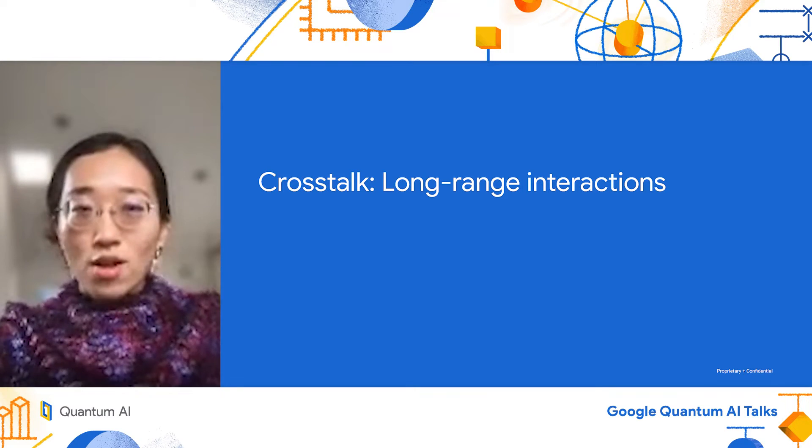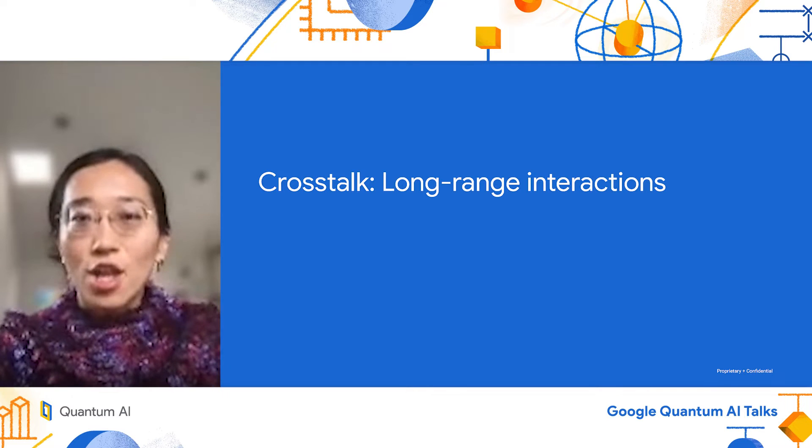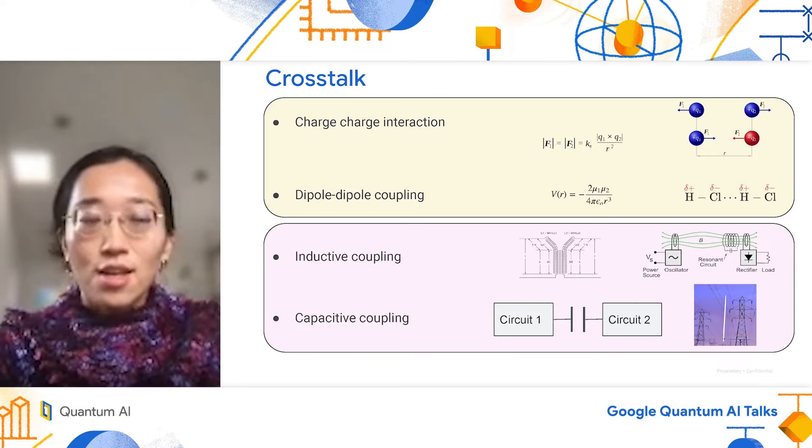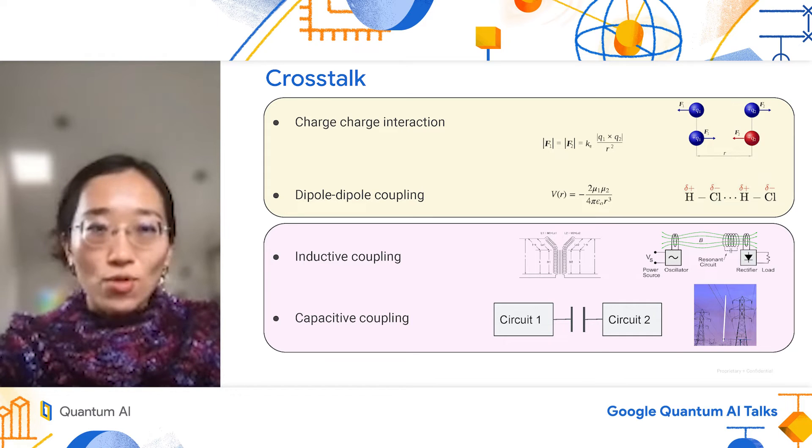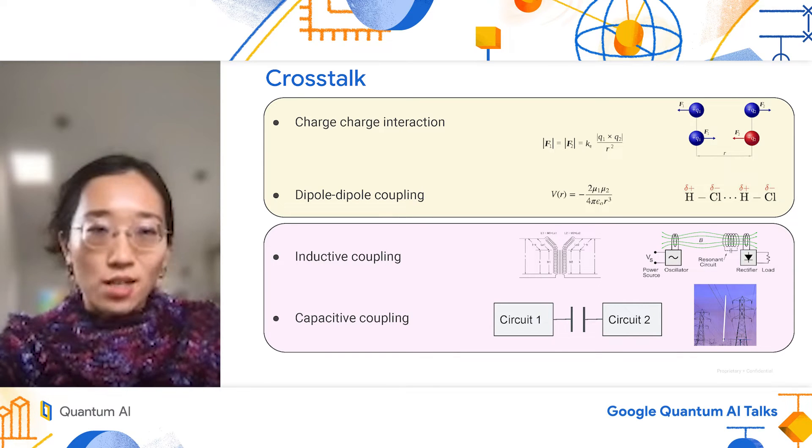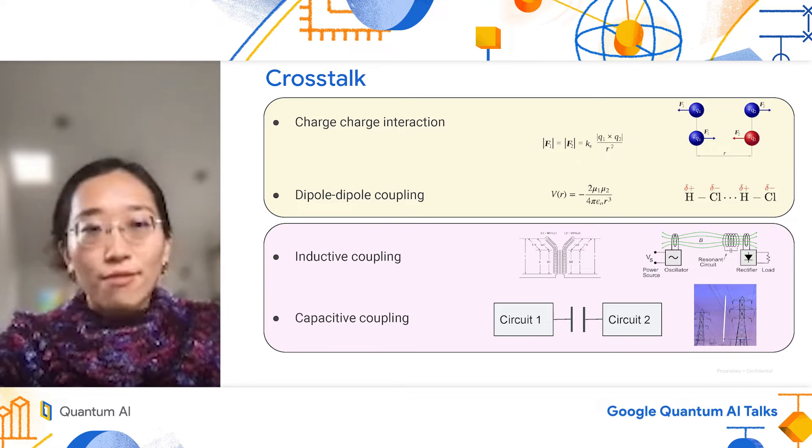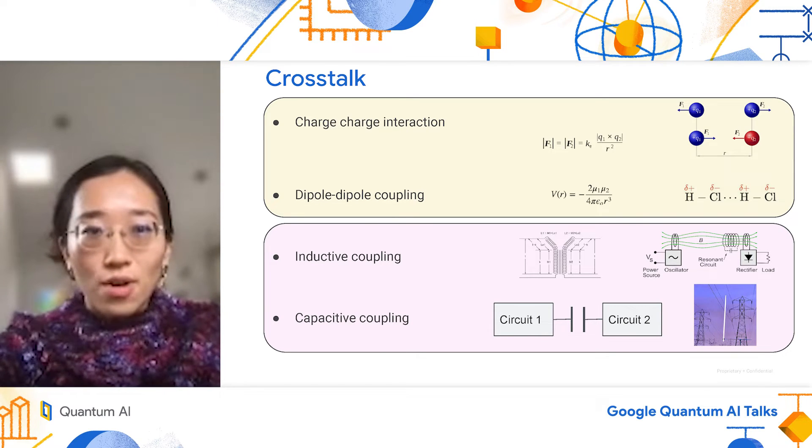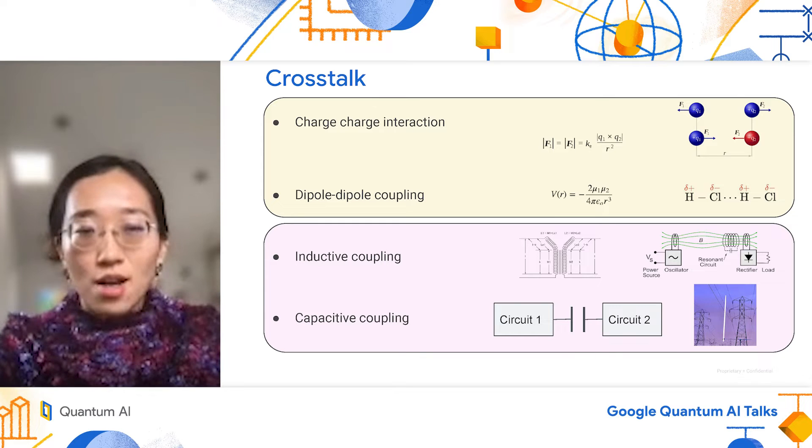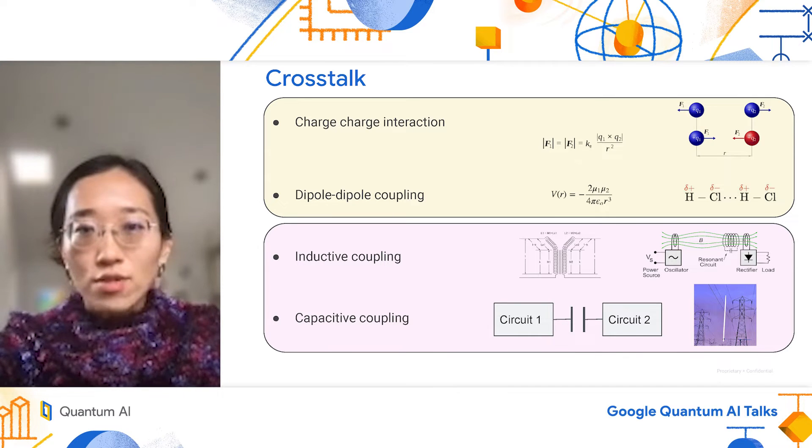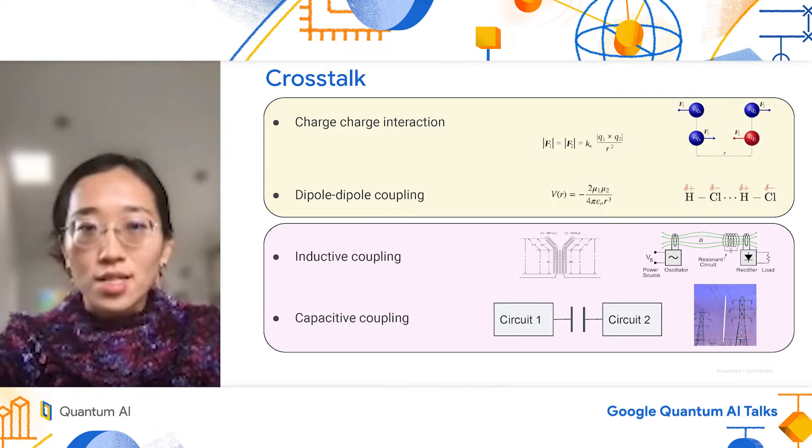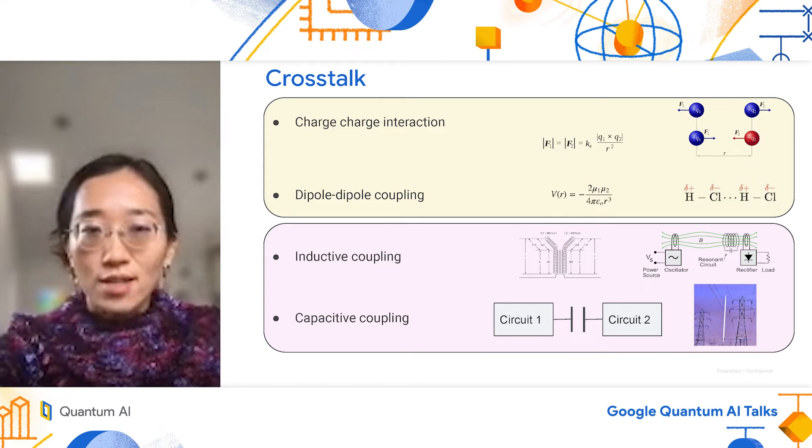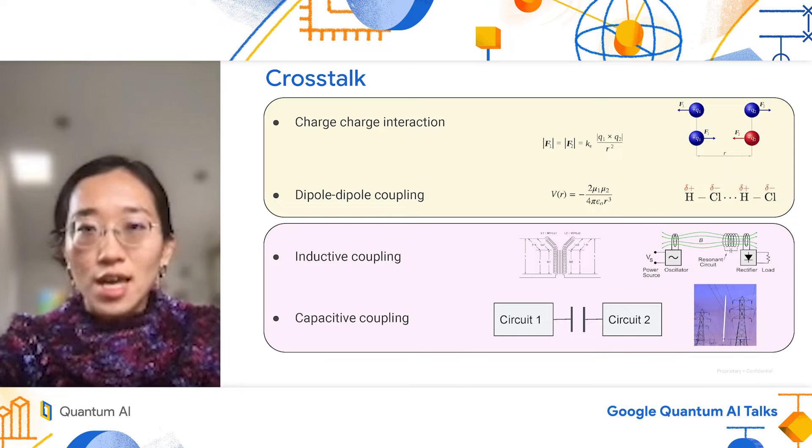First, I will define what crosstalk effects we are mitigating: the long-range interactions between qubits. Long-range parallel-like interactions are everywhere in systems where electromagnetic fields are present. This includes all types of quantum computing systems on the market. We have charge-charge interaction through the familiar Coulomb interaction, and also dipole-dipole coupling for systems that are charge-neutral but where positive and negative charge are spatially separated. These two types of interactions decay differently as a function of distance.